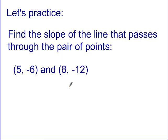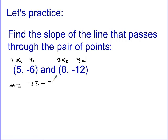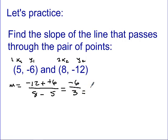Let's do another one. This time I want us to find not only the slope but also the y-intercept so we can write the full equation. We label the points: point 1 and point 2, giving us X1, Y1, X2, Y2. Plugging into M = (Y2 − Y1) / (X2 − X1): Y2 is negative 12, Y1 is negative 6, X2 is 8, X1 is 5. Changing minus to plus-opposite on top: negative 6. Bottom: 8 minus 5 = 3. So slope = negative 6 divided by 3 = negative 2.